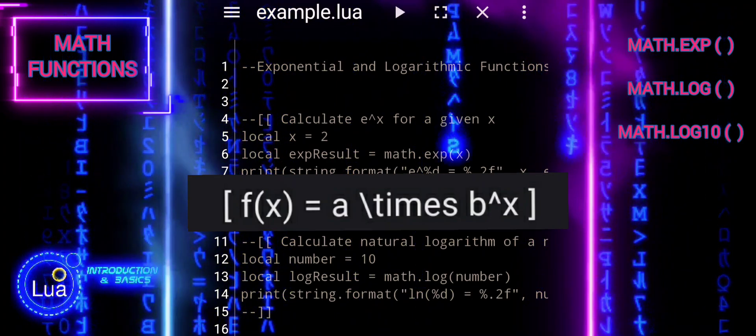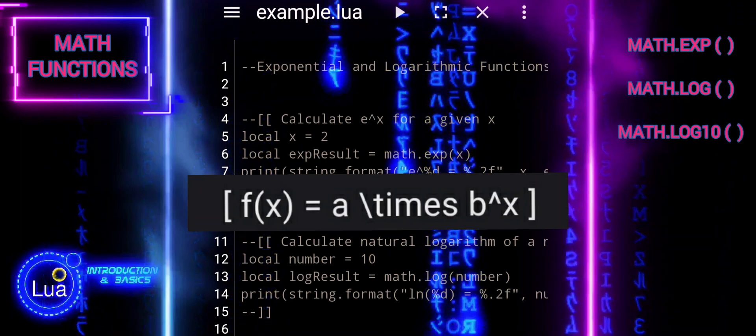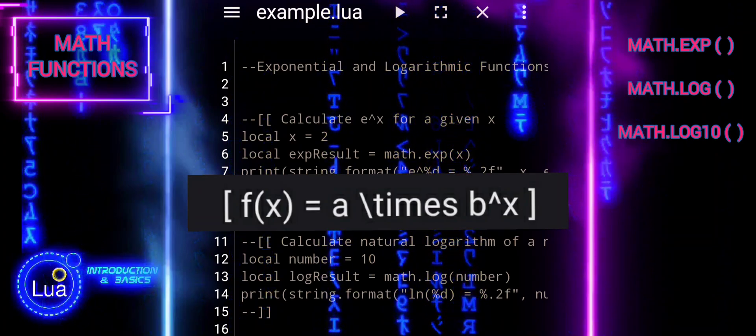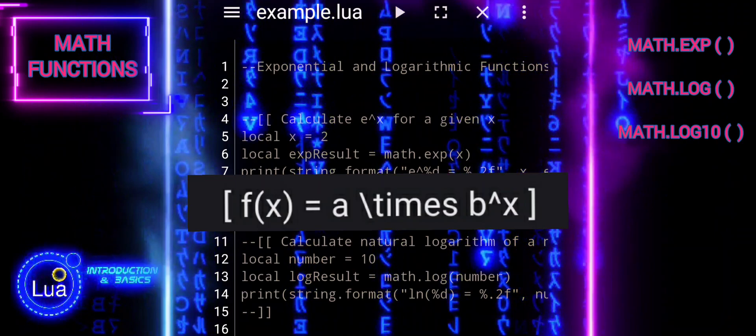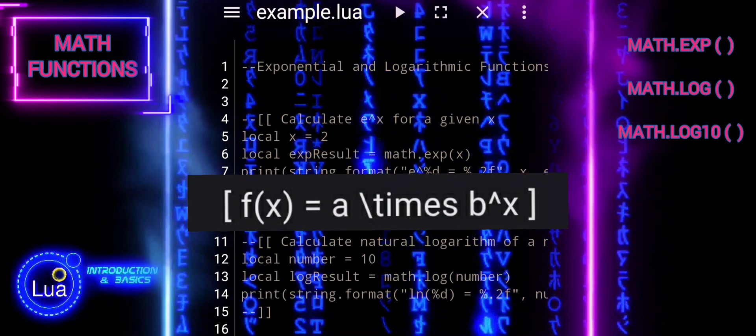x is the exponent. Exponential functions have the unique property that the rate of change of the function with respect to the independent variable x is proportional to the value of the function itself.